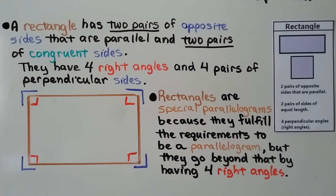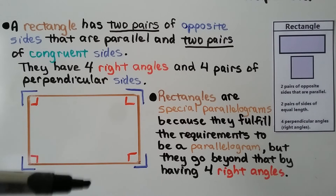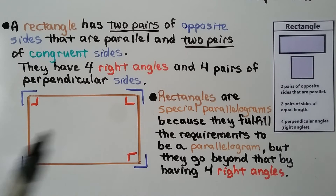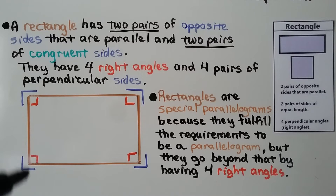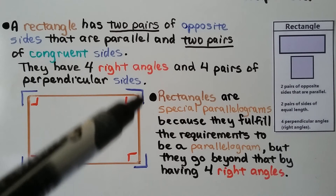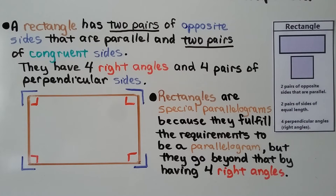A rectangle has two pairs of opposite sides that are parallel and two pairs of congruent sides. They also have four right angles and four pairs of perpendicular sides. Rectangles are special parallelograms because they fulfill the requirements to be a parallelogram, but go beyond that by having four right angles.